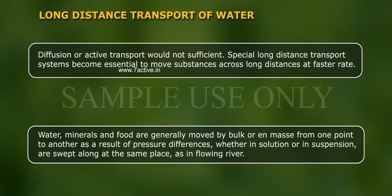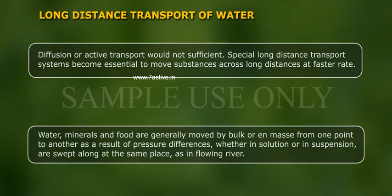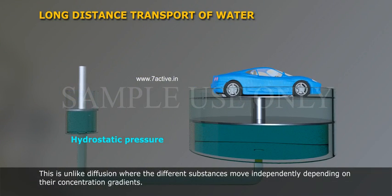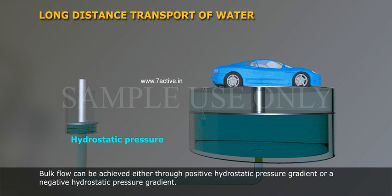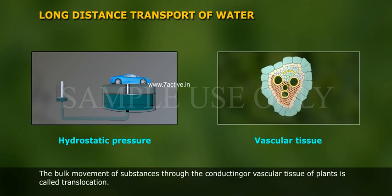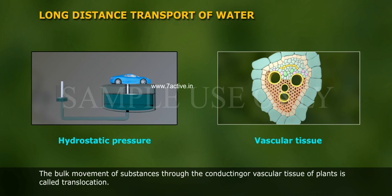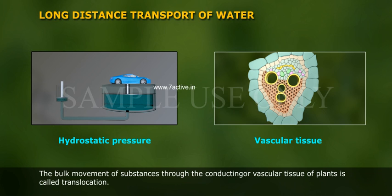Water, minerals, and food are generally moved by bulk or en masse from one point to another as a result of pressure differences. Bulk flow can be achieved either through a positive or a negative hydrostatic pressure gradient. The bulk movement of substances through the conducting or vascular tissues of plants is called translocation.